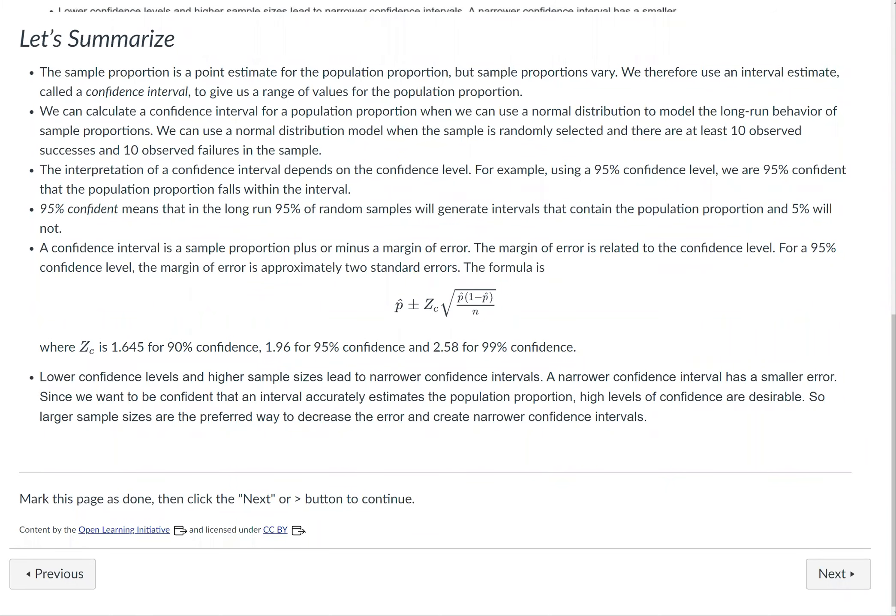Now that we're done with this module, let's summarize what we've learned. The sample proportion is a point estimate for the population proportion, but sample proportions vary by chance. We therefore use an interval estimate called a confidence interval to give us a range of values for the population proportion.